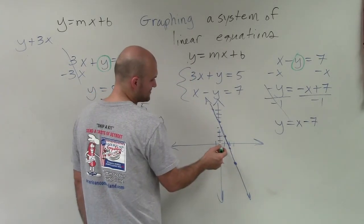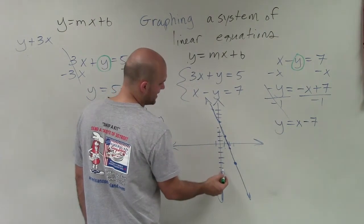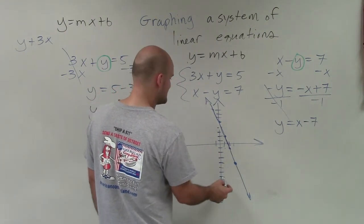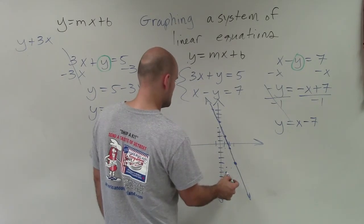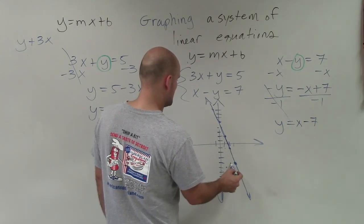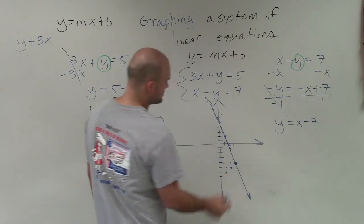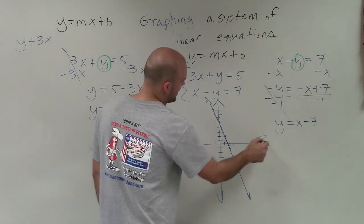So now I go and graph this, which is down negative 7: 1, 2, 3, 4, 5, 6, 7. And negative 7 tells us to go up 1, right 1. Up 1. Up 1. Right 1. Up 1. Right 1.